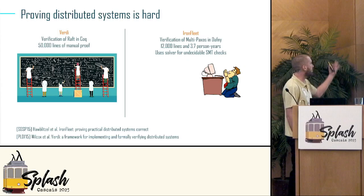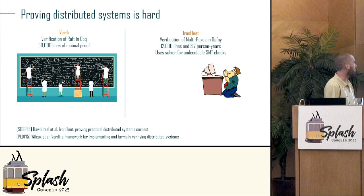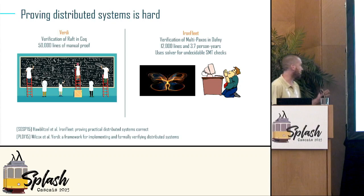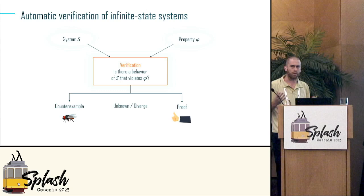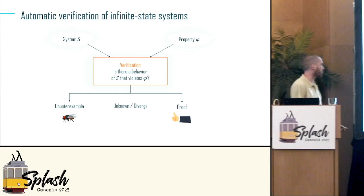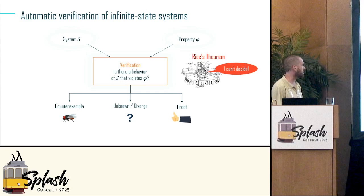Currently, tools like Isabel, Koch, or Iron Fleet take a really long time to prove something. What we want is a validation system: we get a system S and a property, and we either get a counterexample or we get a proof. But Rice's theorem means we sometimes don't know — and that's a problem.